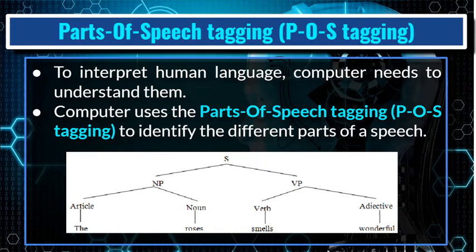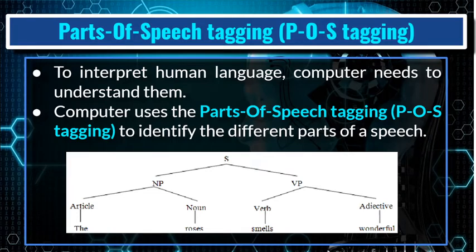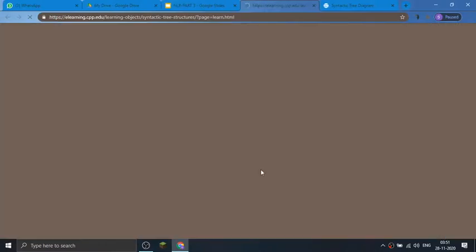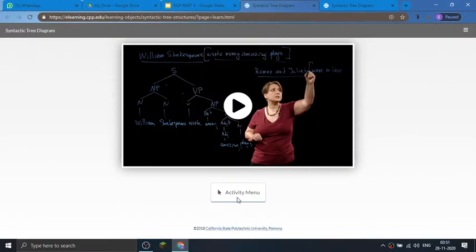A computer uses POS tagging — parts of speech tagging — to identify the different parts of speech. Here I have shown an example of a syntactic diagram, the kind of tree diagram we practice in English to understand parts of speech. I am showing you an online activity to clarify POS tagging a little more.